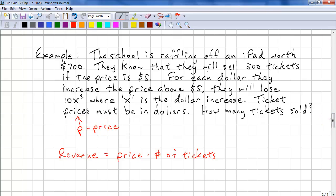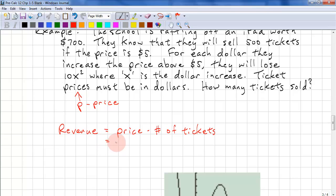So revenue is equal to price times number of tickets. First part is easy. We have a P. Now, we know that they're going to sell 500 tickets if the price is $5. So here, we'll hold on to that.